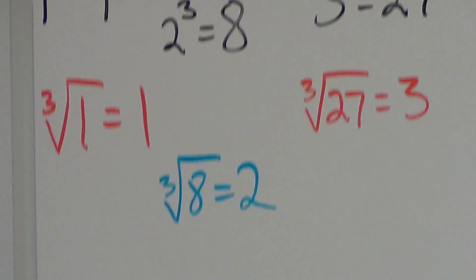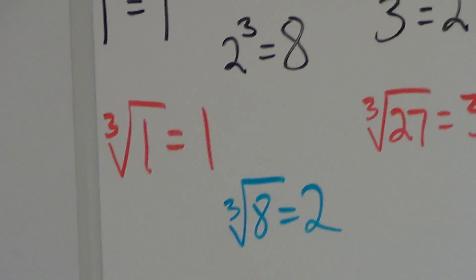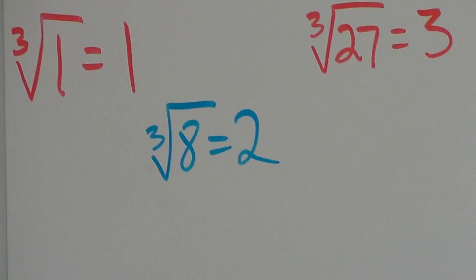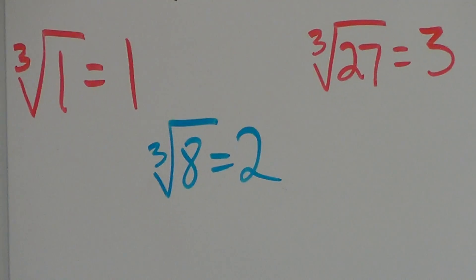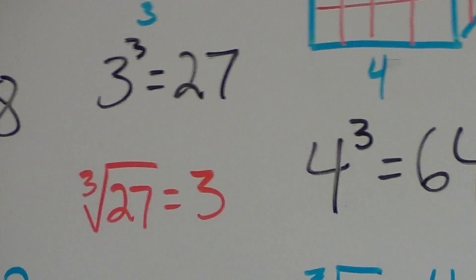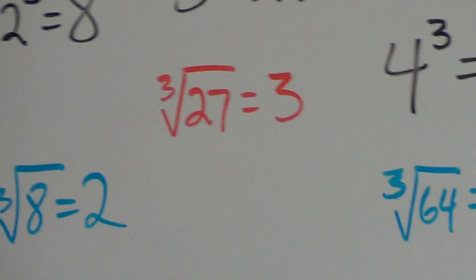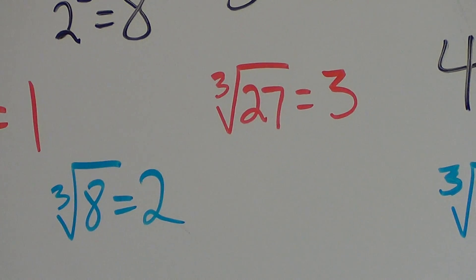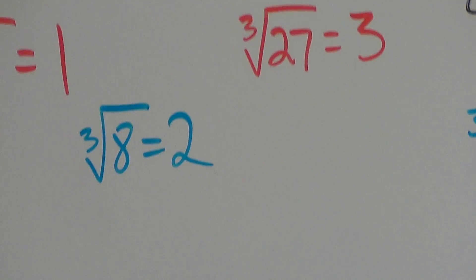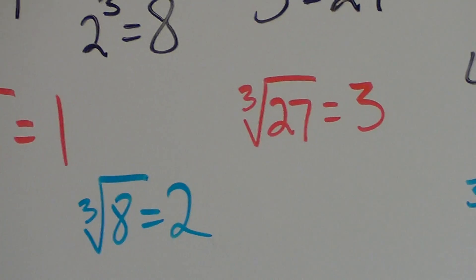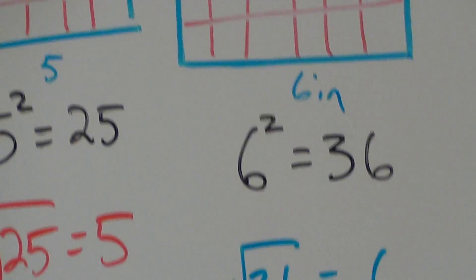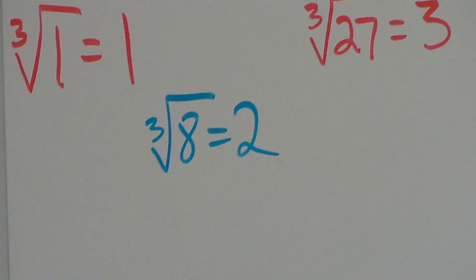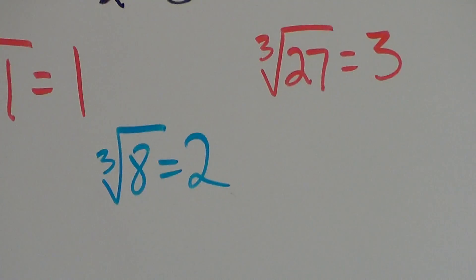It's basically the opposite — what number cubed will equal this number? For example, what number cubed equals 1? The answer is 1. What number cubed equals 8? The answer is 2. And what number cubed equals 27? The answer is 3. So that's what a cubed root is — figuring out what number, when you cube it, equals the number in the cubed box. It's represented with a little 3 and then the root box, unlike the square root which has no number.